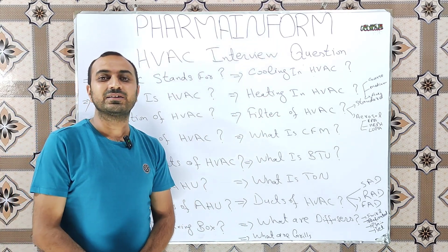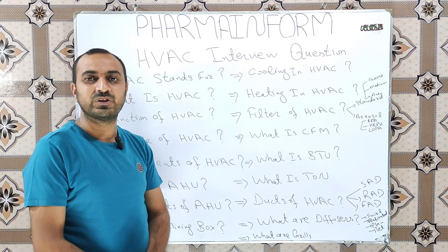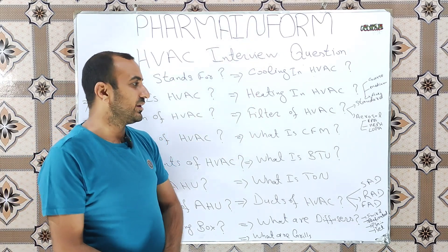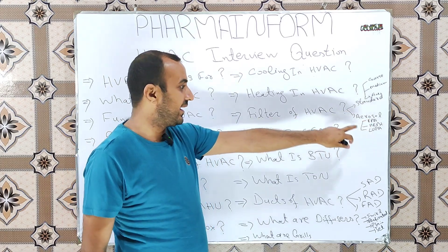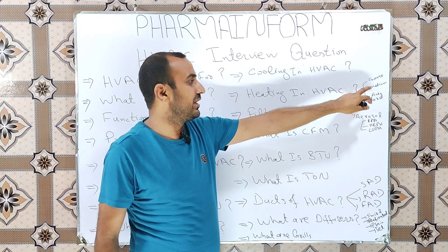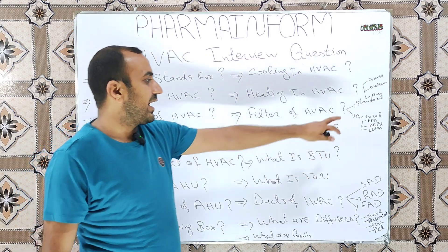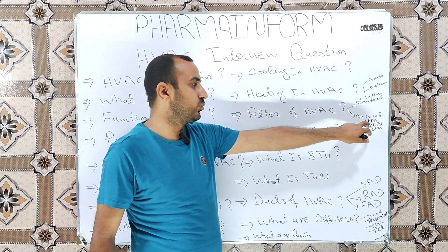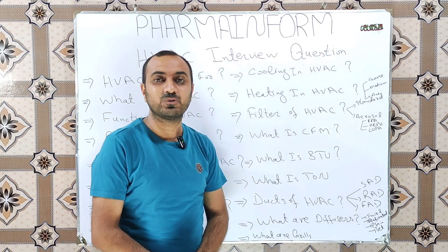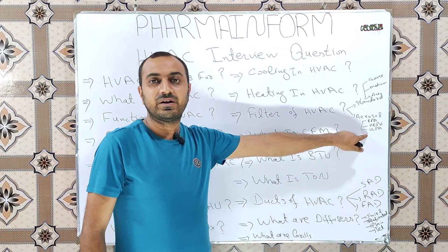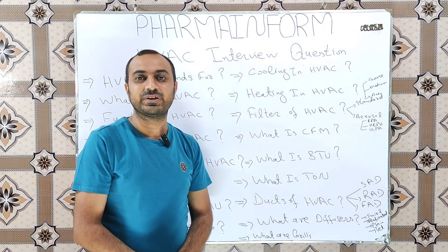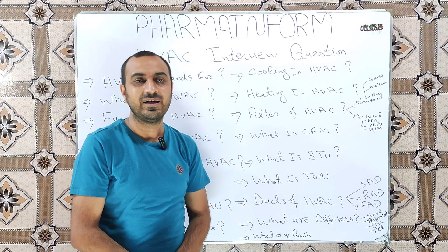The next question is: what are the filters of HVAC? Two types of filters are installed in HVAC: standard filters and aerosol filters. Standard filters are further classified into coarse filters, medium filters, and fine filters. Aerosol filters are further classified into HEPA (high efficiency particulate air filters) and ULPA (ultra low particulate air filters). If you want to learn details of filter classification, watch the dedicated video — the link is given in the description.